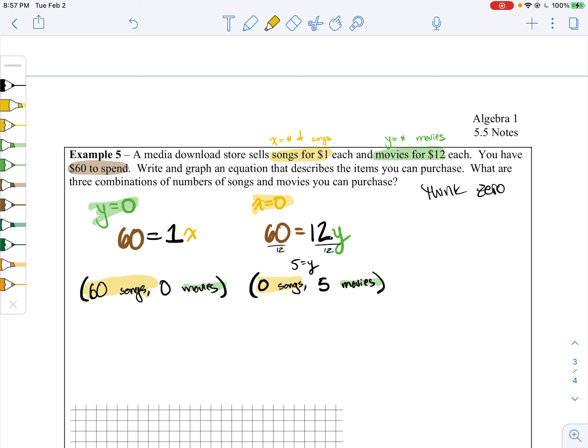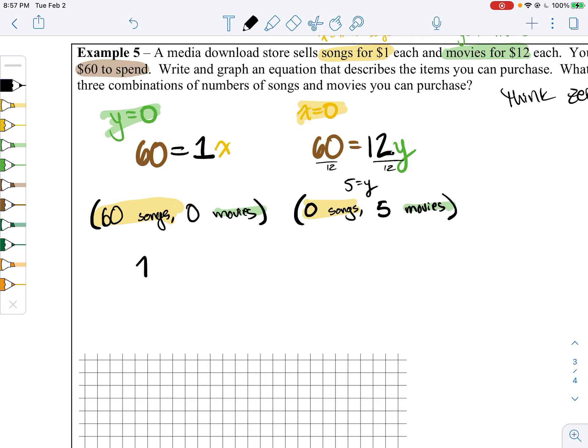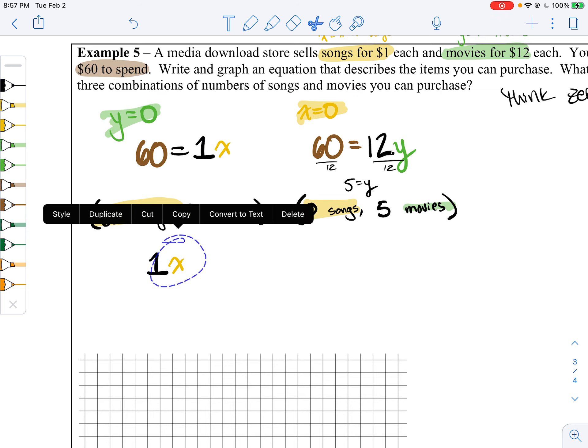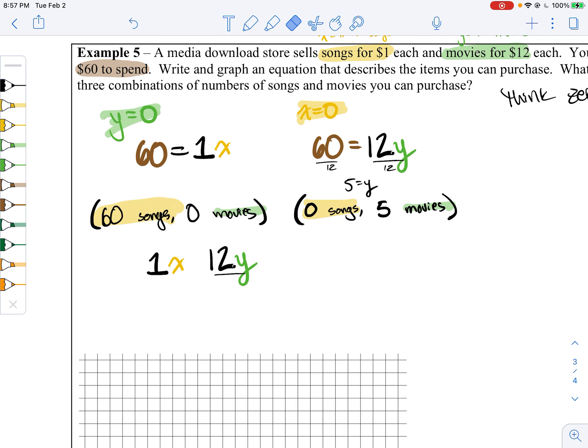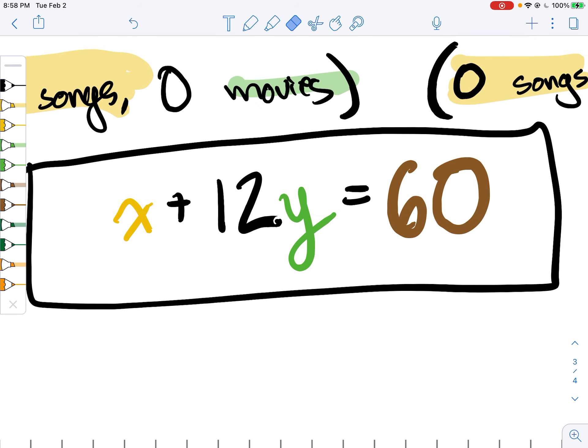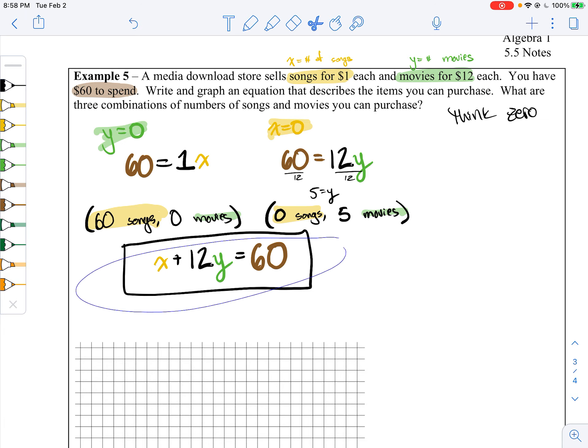We've kind of written an equation already. But here we go. I'm just going to take what we have and I'm going to put them together. You have the price of the songs plus the price of the movies. You add them together and put your total. How much can you spend? And there you go. That's your equation. x plus 12y equals 60. And now we can graph it!